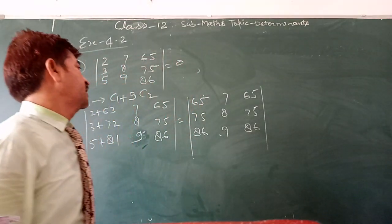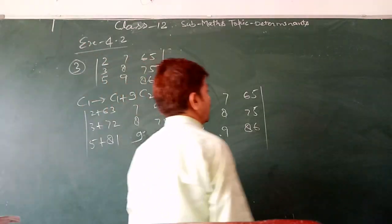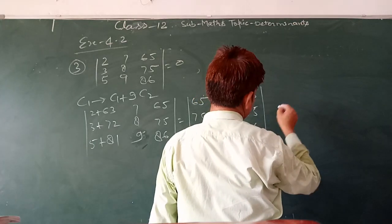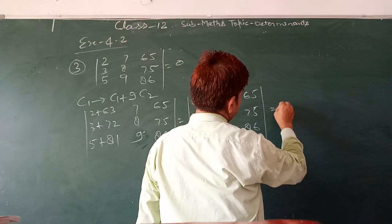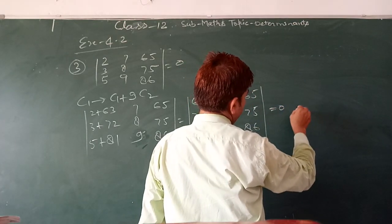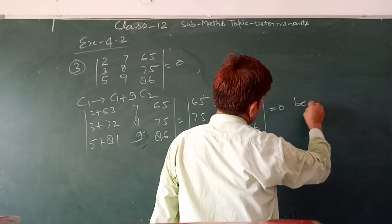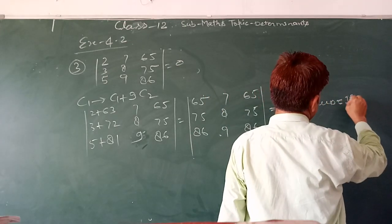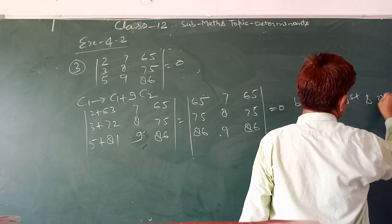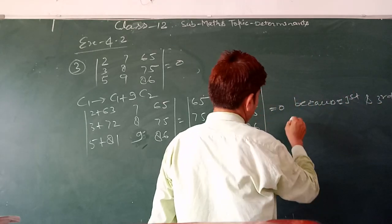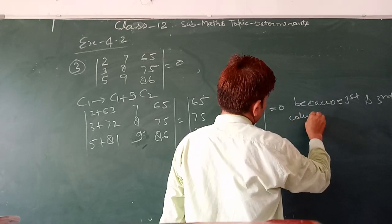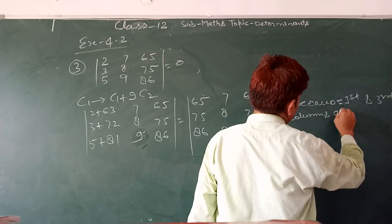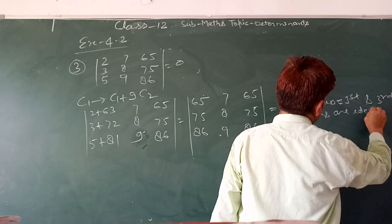Clearly 1st and 3rd column are adding to each other. It is equal to C1 because 1st and 3rd columns are adding to each other.